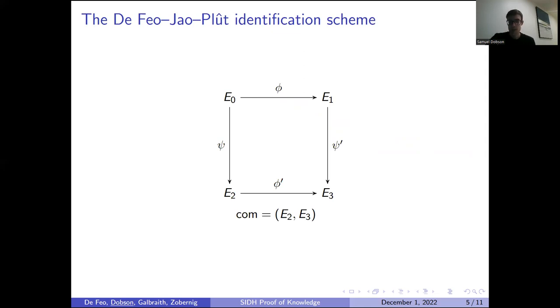Challenge equals zero, we provide the two vertical sides of the square, which are ephemeral and shouldn't reveal anything about the secret. Challenge equals one, we reveal the bottom isogeny, which again shouldn't reveal anything about our secret because there's no way to bring this information back to E0.